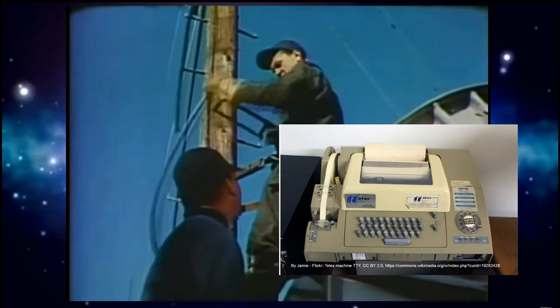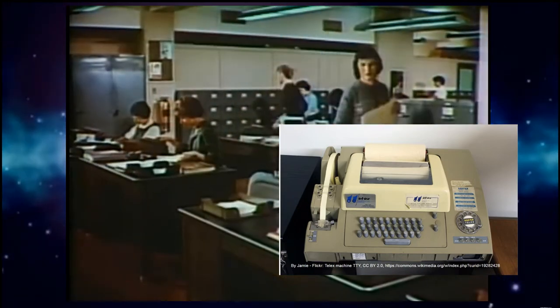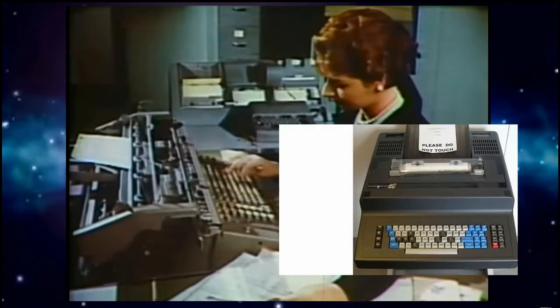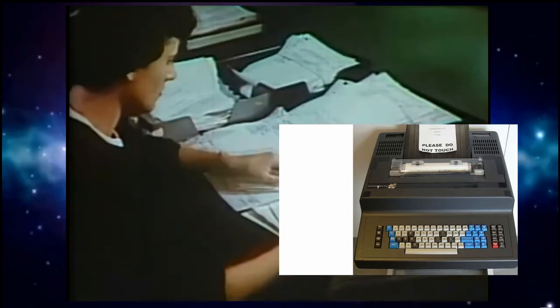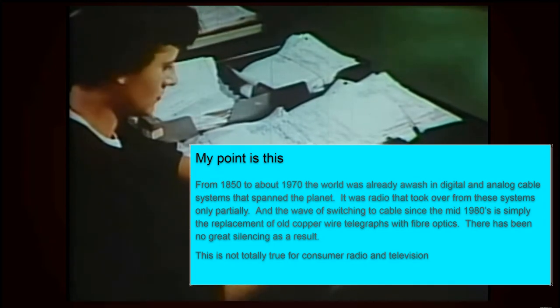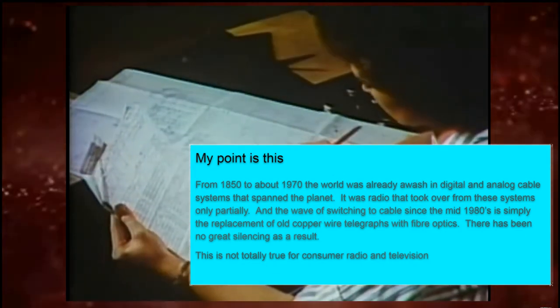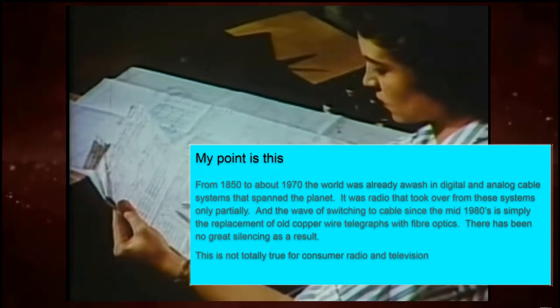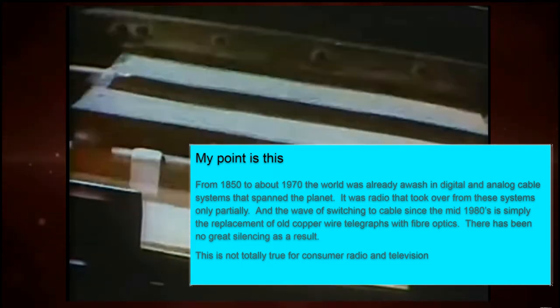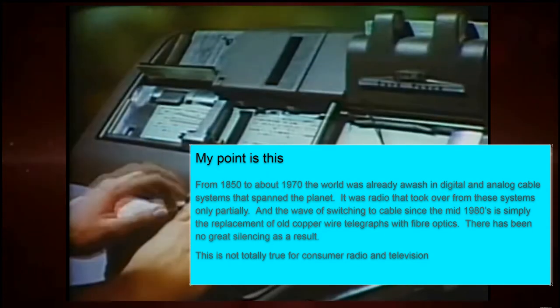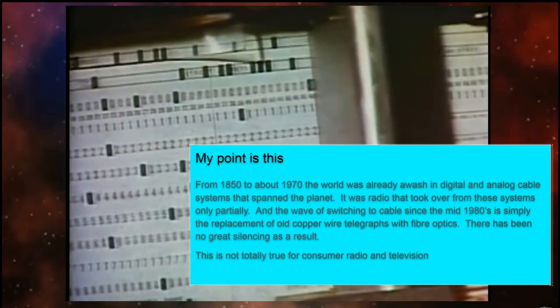Going to the 20th century, Telex. This was the early text messaging system that started in the 1930s and it continued to the 1980s. I remember my sister putting messages through on this system when I was a boy in the 1970s. And it got as far along as this before it slowly fell to the backwaters in terms of the internet. My point is this. From 1850 to about 1970, the world was already awash in analog and digital systems that spanned the planet. It was radio that took over from these systems and only partially. And the wave of switching to cable since the mid-1980s is simply the replacement of old copper wire telegraph system with fiber optics. There has been no great silencing as a result. It's not completely true for consumer radio and television that we'll see in a minute.